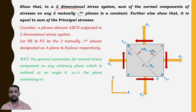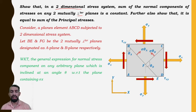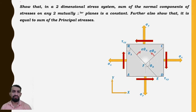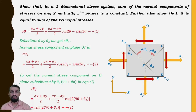Let BE and FG be the two mutually perpendicular planes, designated as plane A and plane B. We know that the general expression for the normal stress component on any arbitrary plane inclined at angle θ with respect to the plane containing σx is: σθ = (σx + σy)/2 + (σx − σy)/2 · cos2θ − τ·sin2θ, which is equation 1.